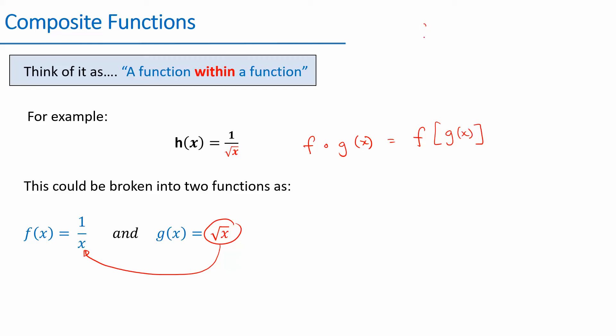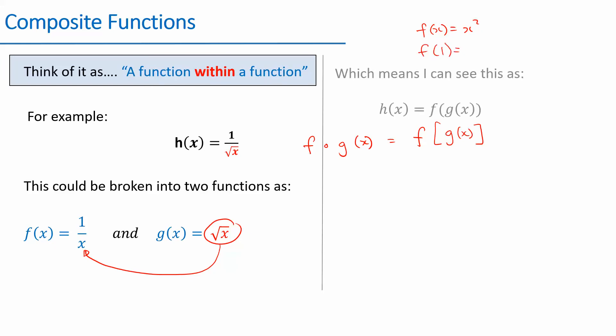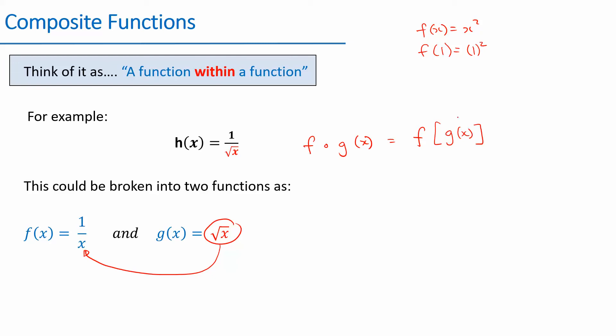I'll do a comparison. Remember you've been doing things like f of X equals X squared, and they say find f of 1 — you substitute 1 where X is, so it ends up being 1 squared. Now instead of a number, you're replacing f with g of X. You're substituting g of X in. So instead of replacing with the number 1, I'm now replacing it with root of X, and that gives me 1 on root of X. That's why I'm calling it a function within a function.